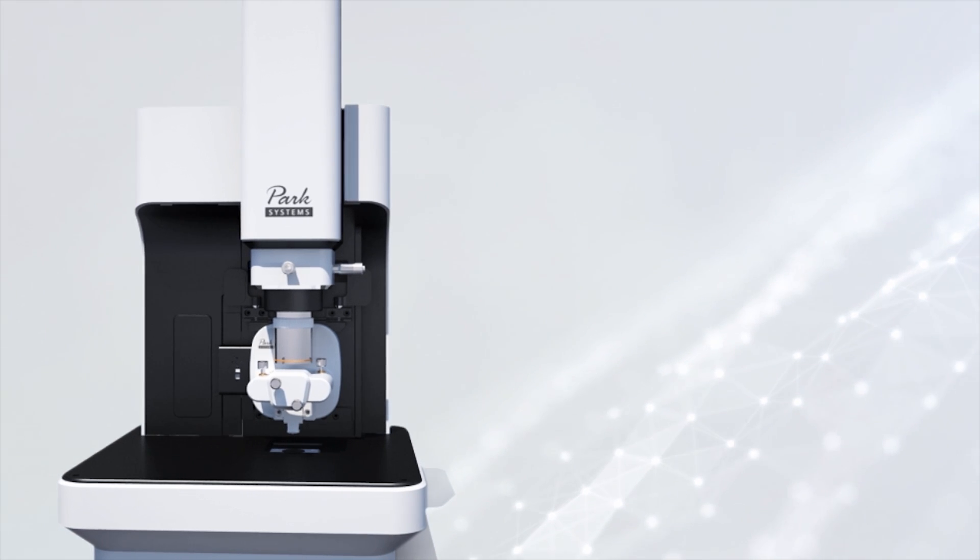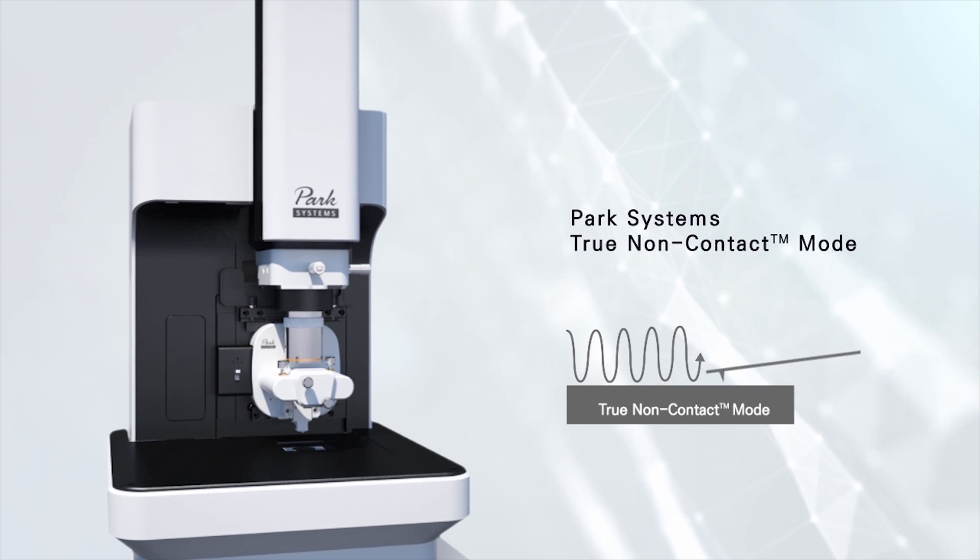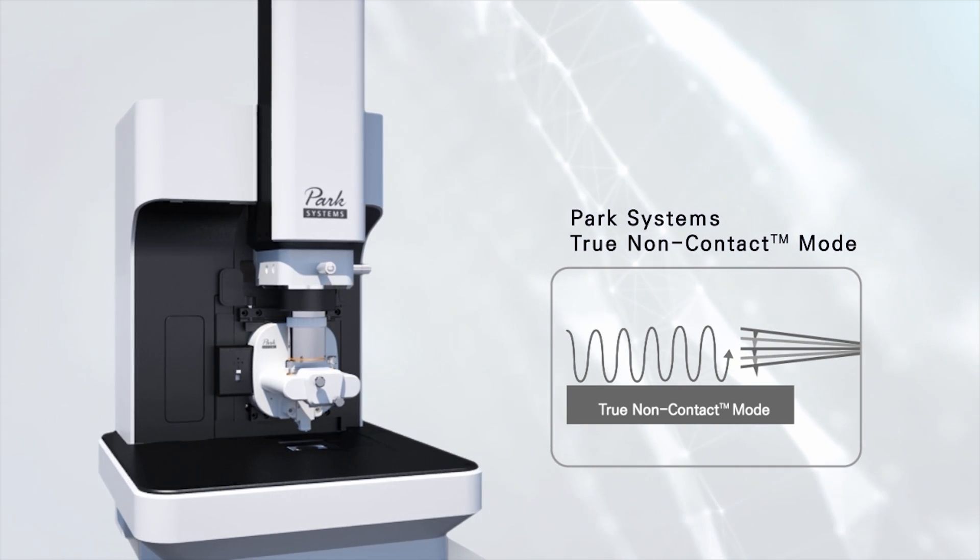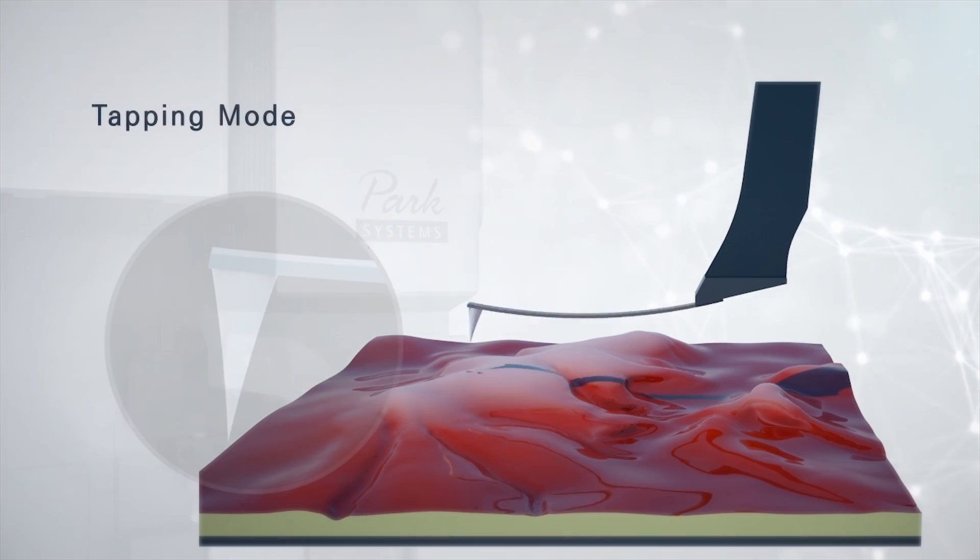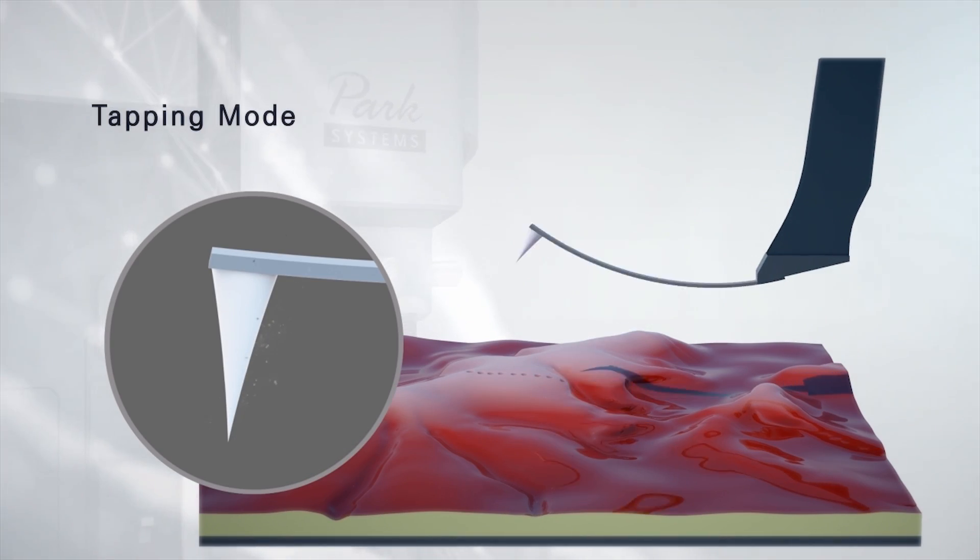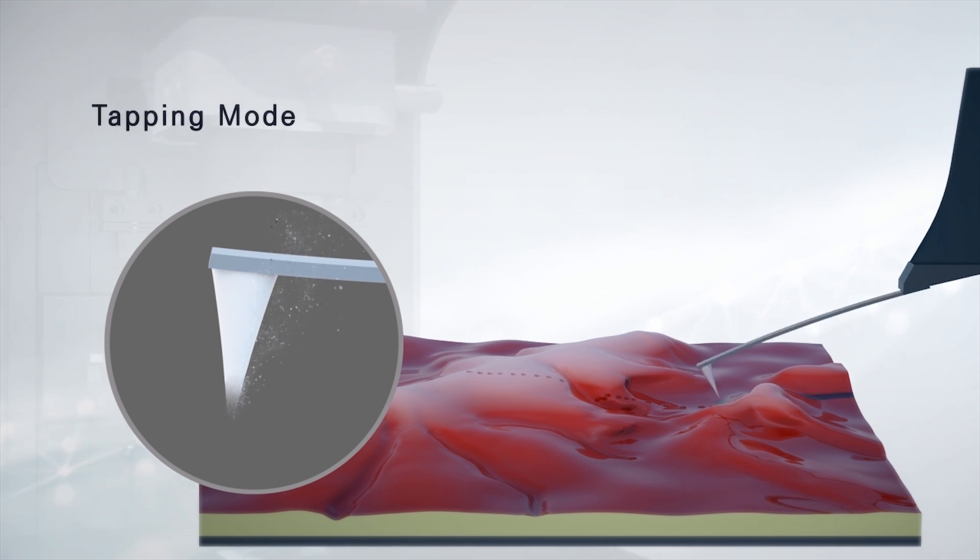In addition, true non-contact mode AFM showcases a different aspect of Park Systems technology that allows users to perform measurements without any contact between the tip and sample. The tapping mode of other companies measure samples in a way that leads to sample damage and tip blunting, resulting in lowered accuracy.